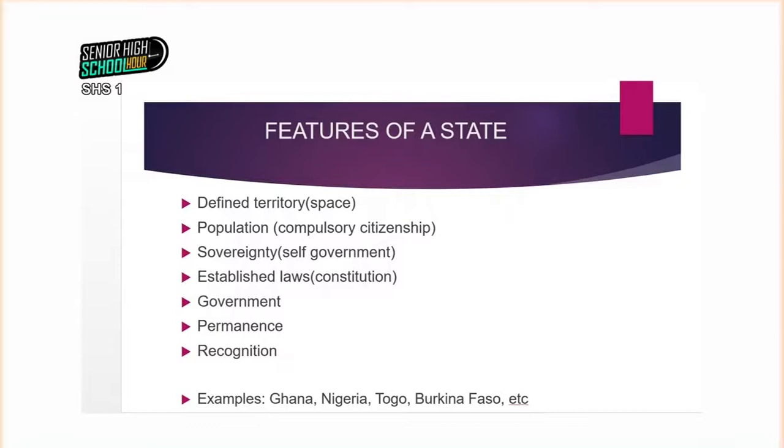Most states of the world enjoy permanence — what we call perpetuity — the fact that it could be there for a very long time. Ghana used to be known as the Gold Coast before independence, but we are still Ghana and still moving on, enjoying a form of perpetuity. Then we'll talk about state recognition — all over the world, people must recognize these features to know that yes, this is a state. So to recap: every state must have a defined territory, its own people or population, sovereignty, established rules or constitution.